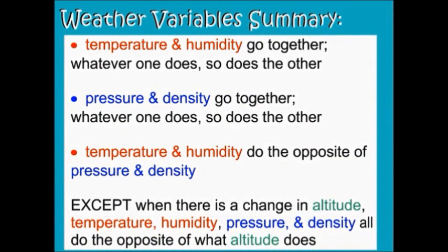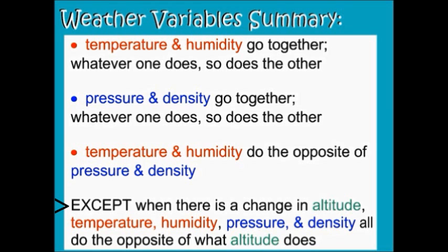Here is our weather variables summary. Temperature and humidity go together — whatever one does, so does the other; if you increase temperature, humidity also increases. Temperature and humidity do the opposite of pressure and density, so if you increase either temperature or humidity, the pressure and density will decrease, and vice versa. The big exception is when there is a change in altitude — temperature, humidity, pressure, and density all do the opposite of what altitude does.